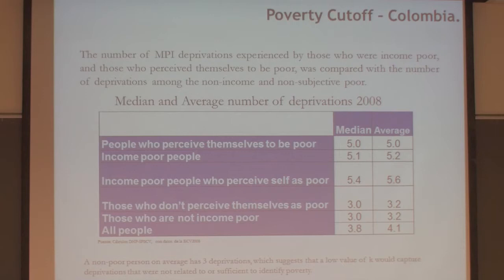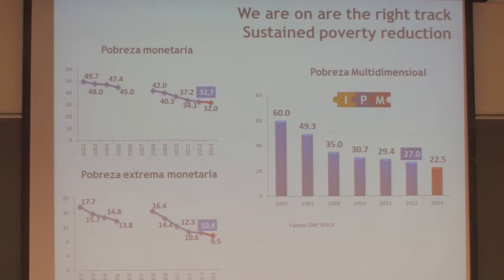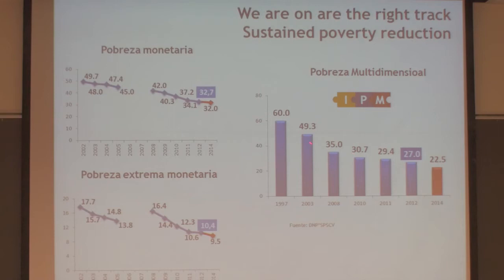These are the results. This is monetary poverty, and this is the break in the series they were talking about. They launched the new monetary measure at the same time they launched the multidimensional poverty measure. These slides are from 2012 results. Multidimensional poverty could be tracked back to 1997, when 60% of Colombians were poor, showing a decreasing trend. Their target was to get poverty to 22.5%.